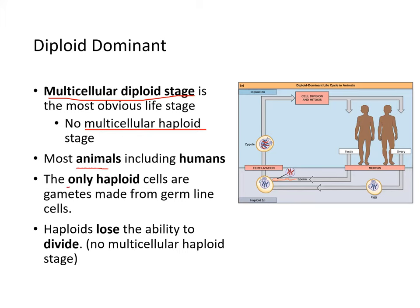Only haploid cells are the gametes, made from germline cells. Haploids, or gametes, lose the ability to divide — they have to be fertilized in order to divide. There is no such thing as a multicellular haploid stage for diploid-dominant organisms.